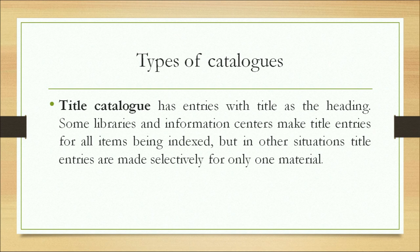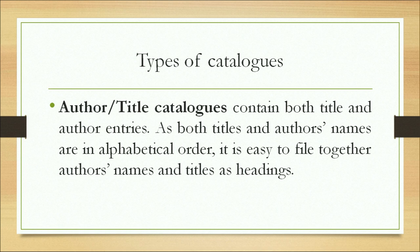Author-title catalogs contain both title and author entries. Since both titles and author names are in alphabetical order, it is easy to file them together as headings. Subject catalogs have an indication of the subject of the document as their headings, and the entries are arranged in an appropriate systematic order.